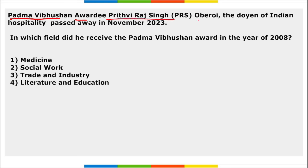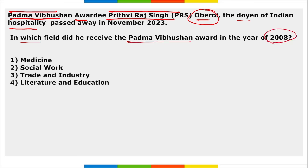Padma Vibhushan awardee Prithviraj Singh Oberoi — the doyen of Indian hospitality — recently passed away. He received the Padma Vibhushan in the field of Trade and Industry in 2008. He is the chairman of the Oberoi Group and passed away at age 94 in New Delhi.